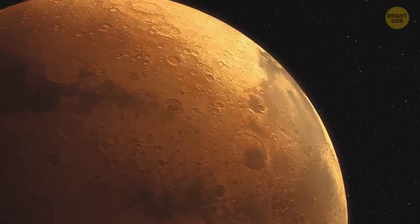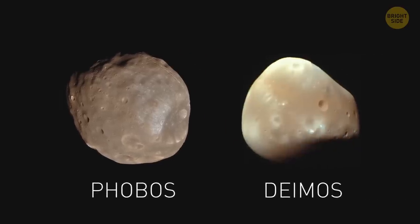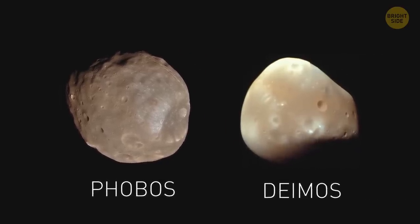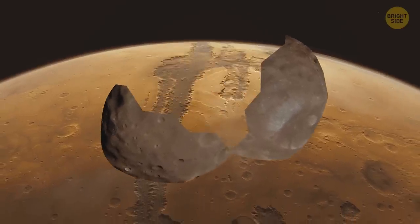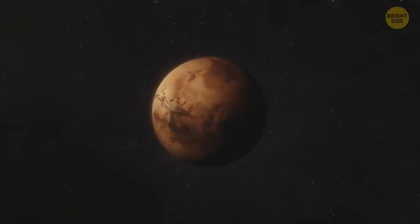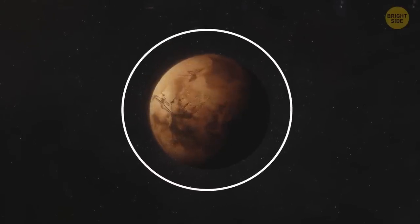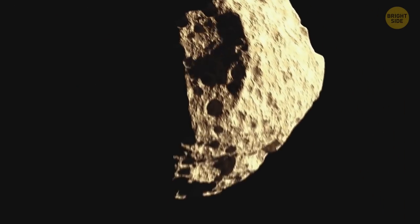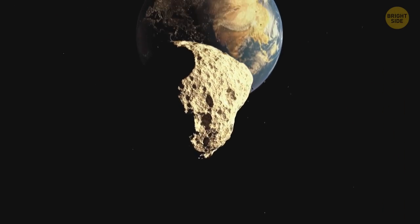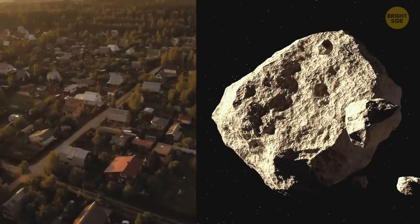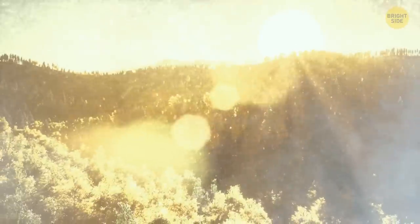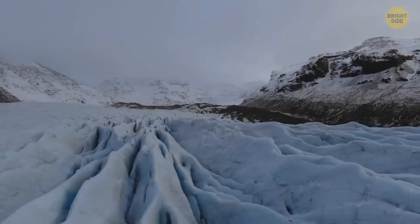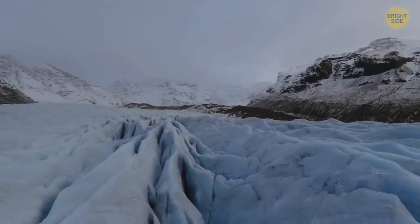Mars has two moons, Phobos and Deimos. In the next 30 to 50 million years, the planet's gravitational forces will tear Phobos apart. It'll probably result in the formation of a ring around Mars. An asteroid the size of a car enters the atmosphere of our planet every year. Such an intruder could wipe out a small town off the face of the Earth. Dust and smoke would rise into the atmosphere, preventing sunlight from reaching the surface of the planet. It would cause the temperatures all over the world to drop and the climate would change. Luckily, such asteroids burn in the atmosphere before they even come close to the surface.